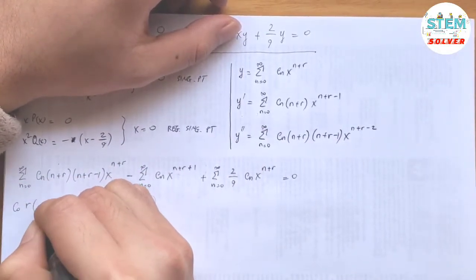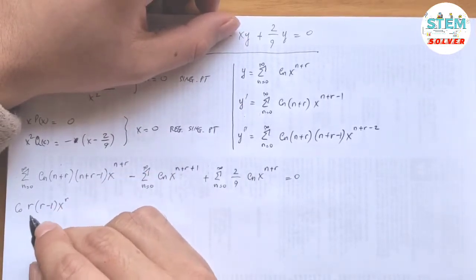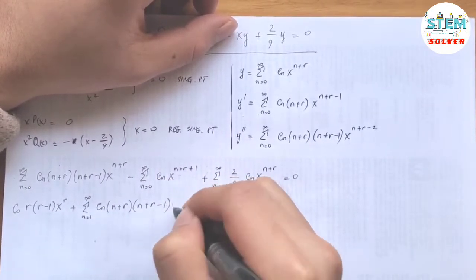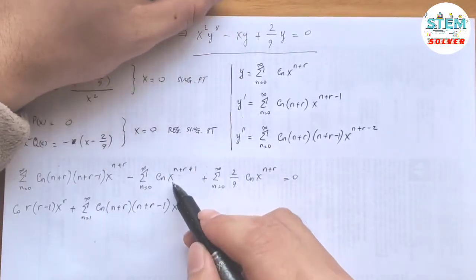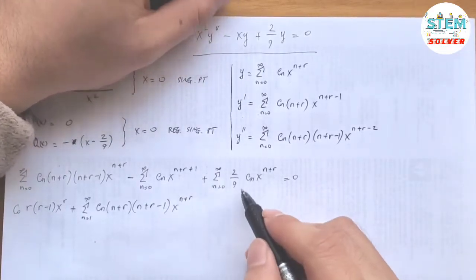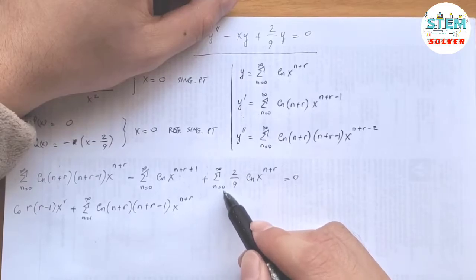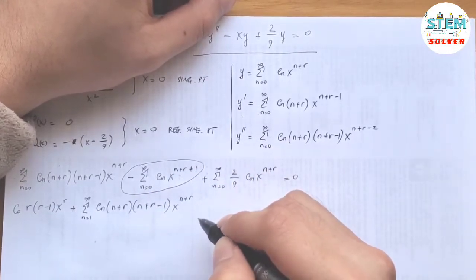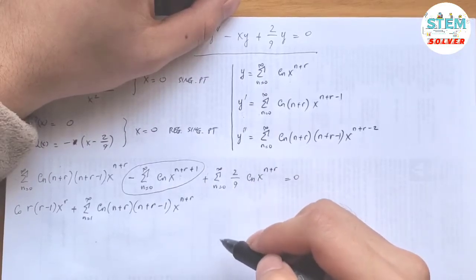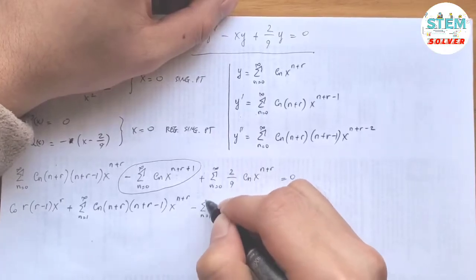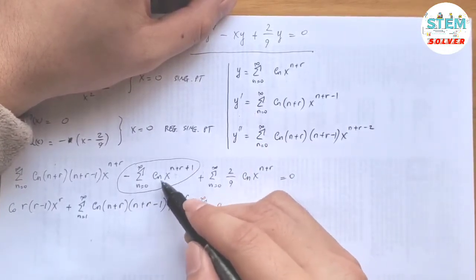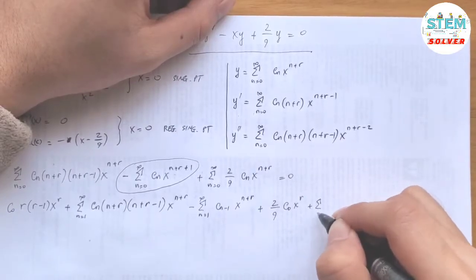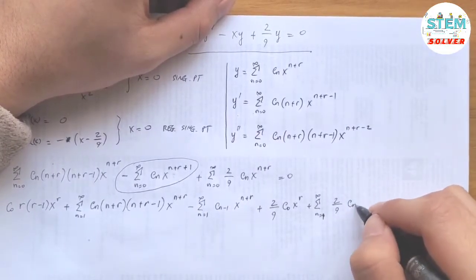Running out the n equals 0 term from the first series gives c_0 r(r minus 1) times x to the r. For the second series (which has x to the n plus r plus 1), we re-index from n equals 1 so we replace c_n with c_{n minus 1}, yielding x to the n plus r. Running out n equals 0 from the third series gives 2/9 c_0 x to the r, plus the remaining power series from 1 to infinity of 2/9 c_n x to the n plus r equals 0.